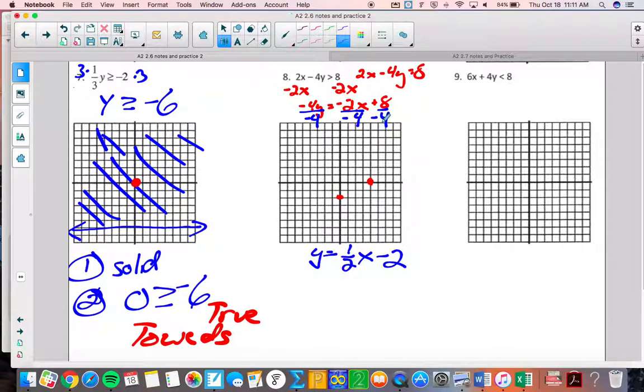If I were to graph this, check this out. My y intercept is negative 2, and then I go up 1, right 2. Up 1, right 2. If I would have just connected those red dots right away, I'd still have the same line. Now, this is going to be a dashed line. So, I'm dashing. And now, we need to do the old test point.